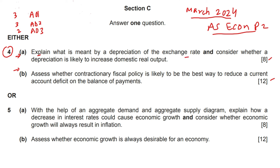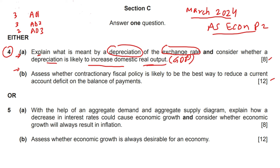The question says: explain what is meant by depreciation of exchange rate. Here the term real GDP, also known as real output, can be used interchangeably. Exchange rate is the first knowledge point and depreciation is the second knowledge point for Assessment Objective 1. Real GDP or real output is another Assessment Objective 1 term.